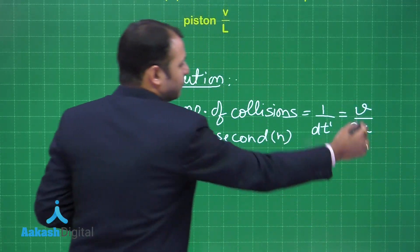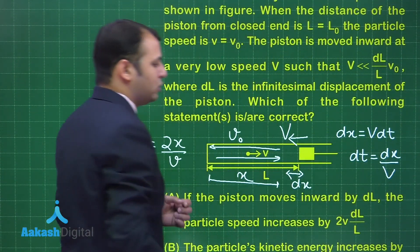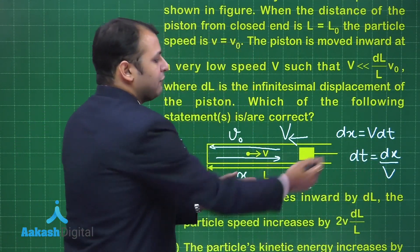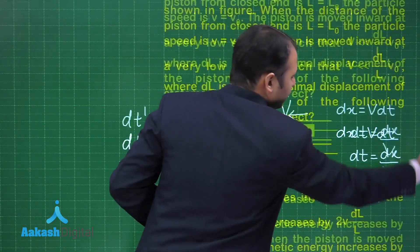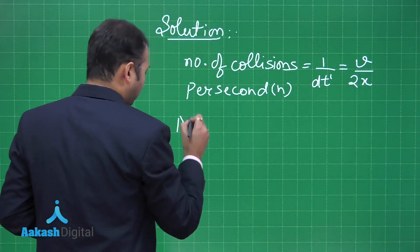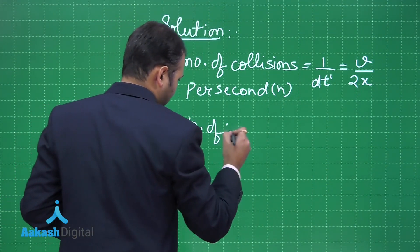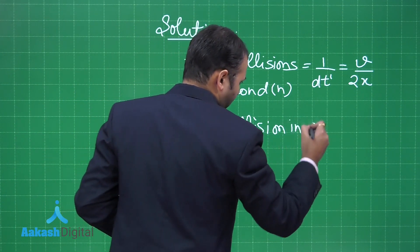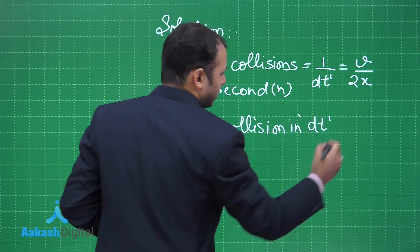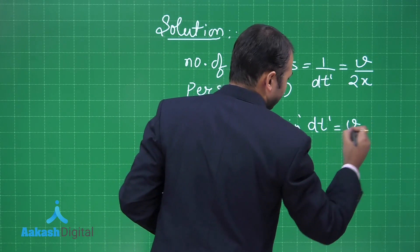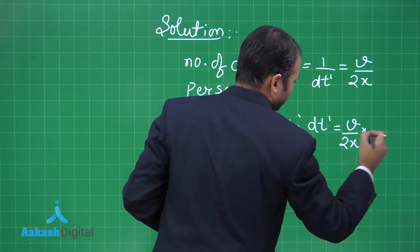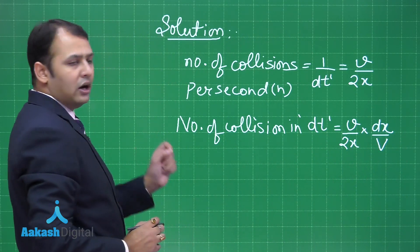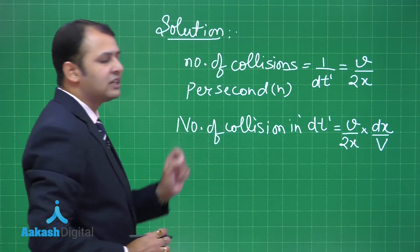This is the number of collisions per second. To find how many collisions take place in time dt, we multiply: number of collisions in dt = (v/2x) × (dx/V). Note this should be negative as the distance is getting smaller with the piston moving inward.